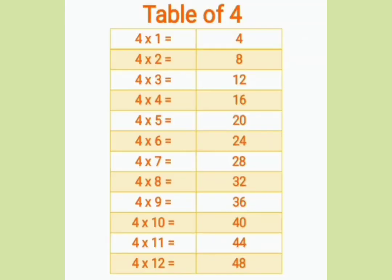Four ones are four, four twos are eight, four threes are twelve, four fours are sixteen, four fives are twenty, four sixes are twenty-four, four sevens are twenty-eight, four eights are thirty-two, four nines are thirty-six, four tens are forty, four elevens are forty-four, four twelves are forty-eight.